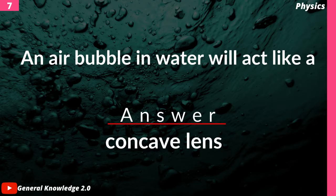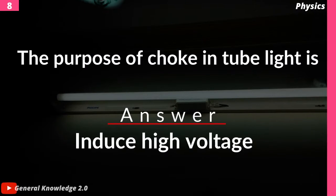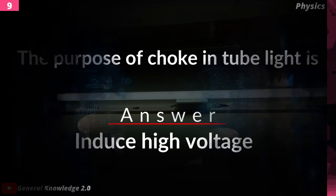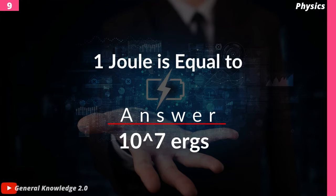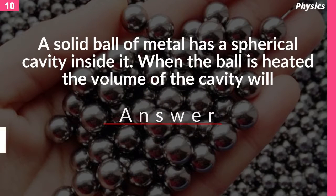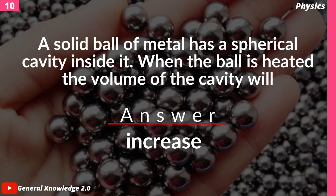An air bubble in water will act like a — answer: concave lens. The purpose of choke in tube light is — answer: to induce high voltage. Joule is equal to — answer: 10^7 ergs.